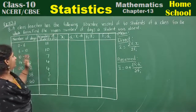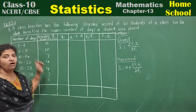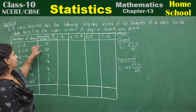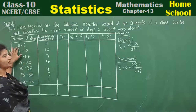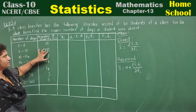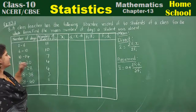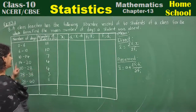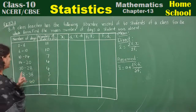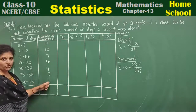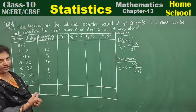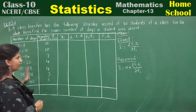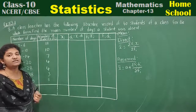They have given data. Number of days, number of students — we are going to consider the number of students as the frequency fi. 11 children are absent between 0 to 6 days; 10 students, 6 to 10 days; 7 students, 10 to 14 days; 4 students, 14 to 20 days; 4 students, 20 to 28 days; 3 students, 28 to 38 days; and 1 student between 38 to 40 days. Observe carefully — the class interval is continuous but class size is not constant.